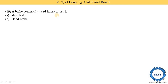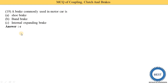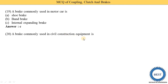A brake commonly used in motor cars — option A: shoe brake, option B: band brake, option C: internal expansion brake. The correct answer is internal expansion brake. In railway lines, shoe brake is used, while in motor cars the internal expansion brake is used.